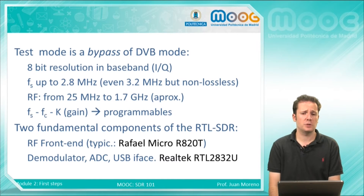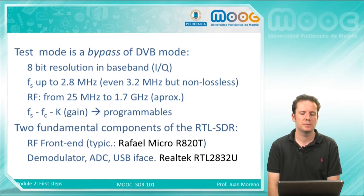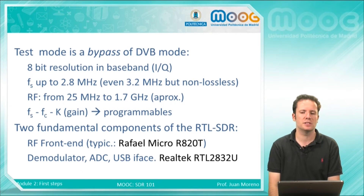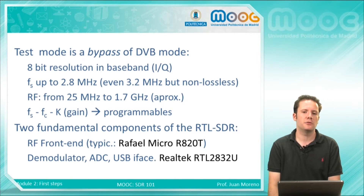The range of frequencies for the receivable signals goes from 25 MHz to 1.7 GHz. I note that this is an approximation because it depends on the device and on the temperature. There are three main parameters that you can configure: the sampling frequency (the FS parameter), the center frequency (the RF frequency, i.e., the central frequency of the band), and also the gain.